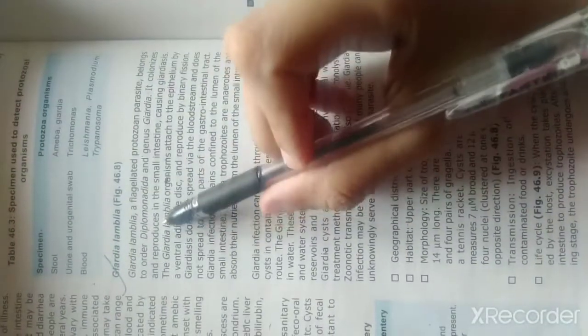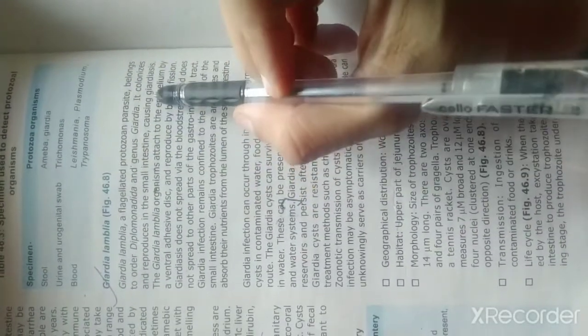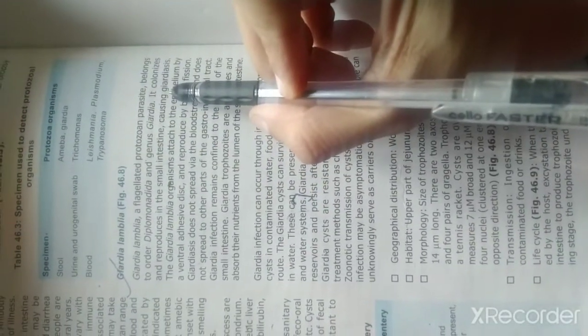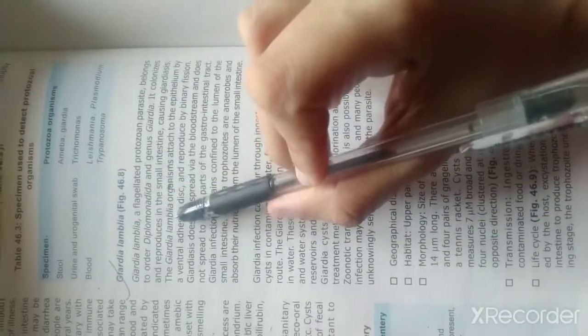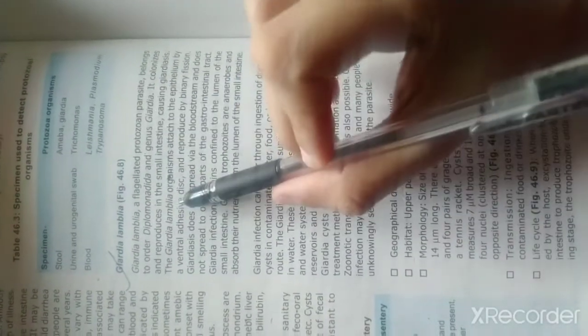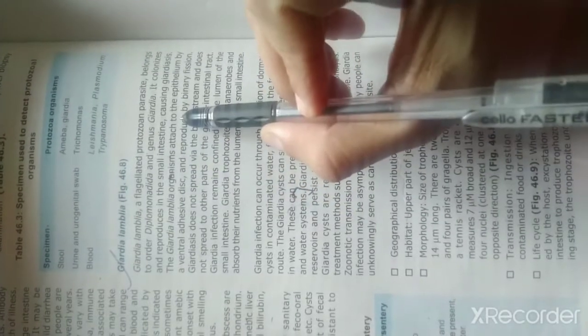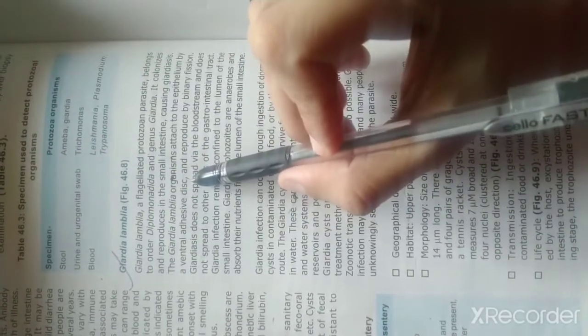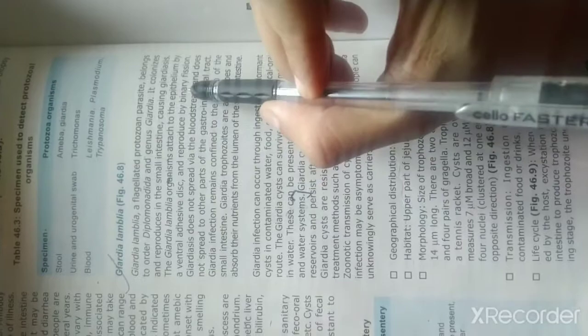It colonizes and reproduces in the small intestine, causing giardiasis. The Giardia lamblia organism attaches to the epithelium by a ventral adhesive disc and reproduces by binary fission.